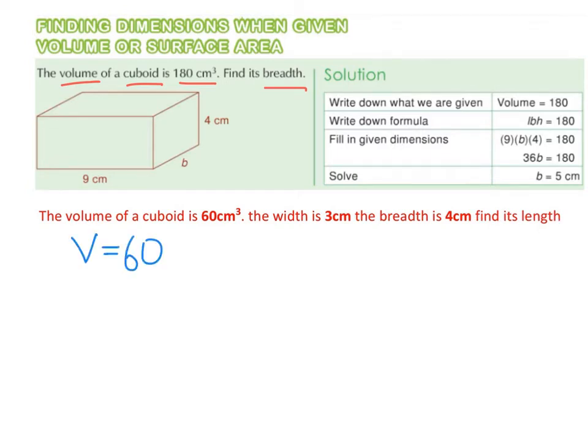So we're going to start by writing down what we're given. The volume equals 60. Then we write down the formula for volume. And this time I'm using the formula length by width by height. This is equal to 60.